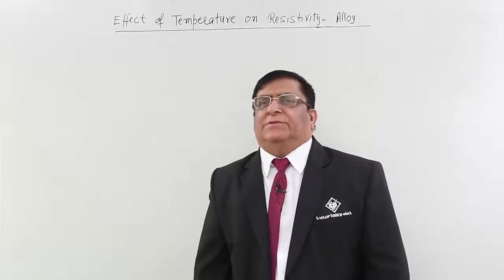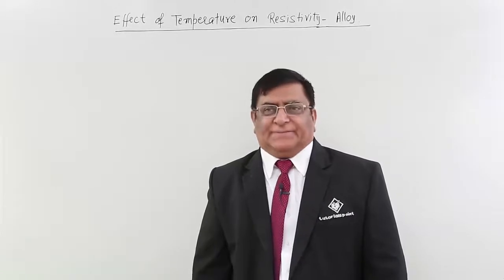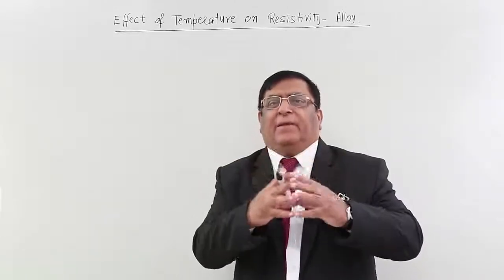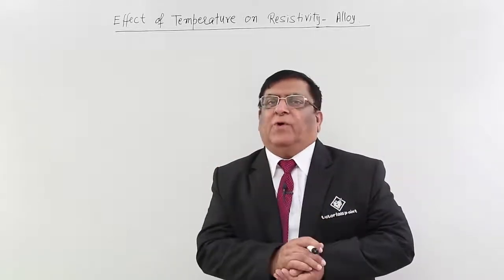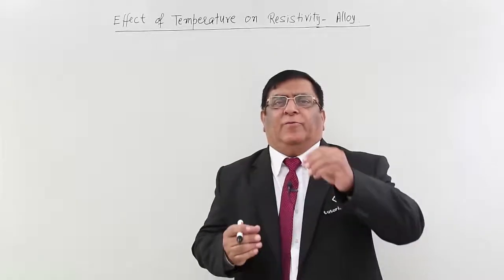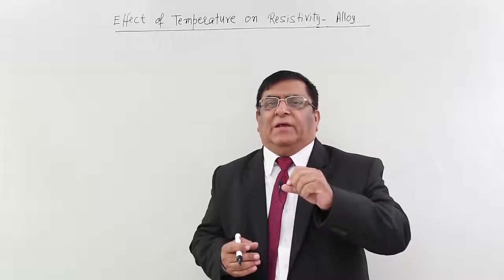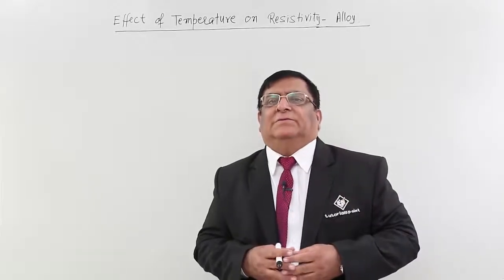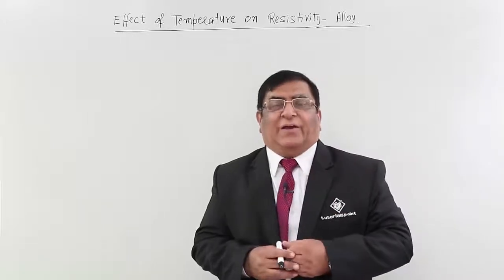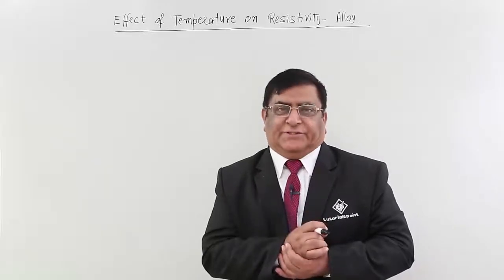We have seen that in metals, when temperature increases, the resistance increases. Now we combine two or three metals and make an alloy. There is a wide variety of alloys — like alnico (aluminum, nickel, cobalt), and alloys of copper and zinc such as brass — and there are many more alloys which you study in chemistry and metallurgy.